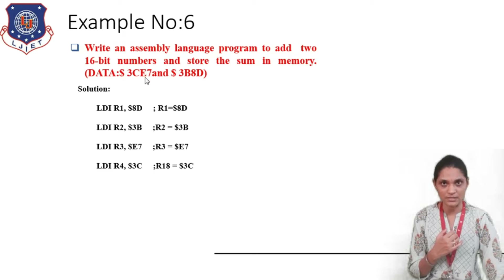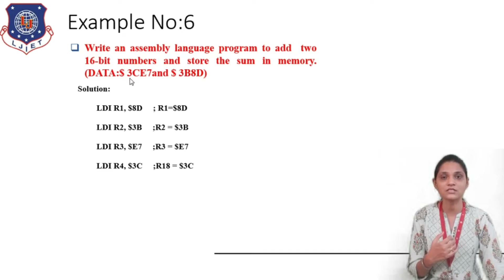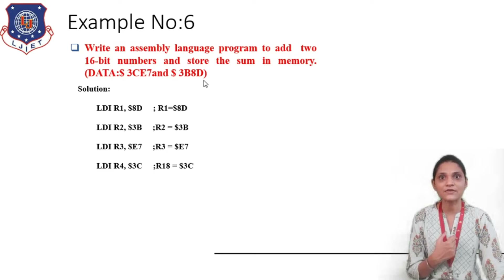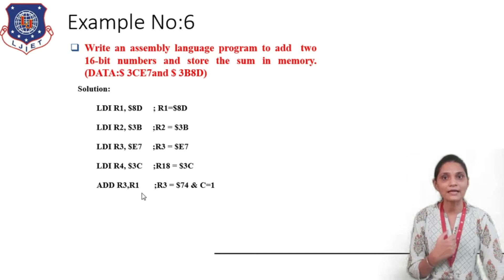Now for the addition, we first add the lower bytes E7 and 8D. Then we add the upper bytes 3C and 3B, but if the first addition of E7 and 8D generates any carry, we have to add that carry into the second addition of 3C and 3B. So first we use the ADD instruction, and for the second addition we use the ADD with carry instruction. Our first data E7 and 8D is stored inside registers R1 and R3, so the instruction is ADD R3, R1.